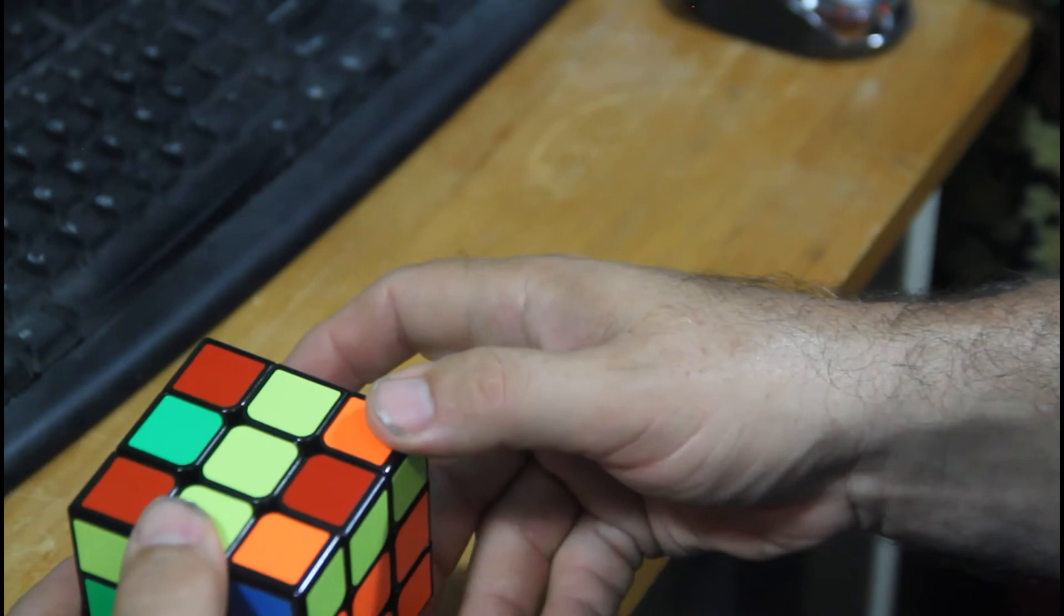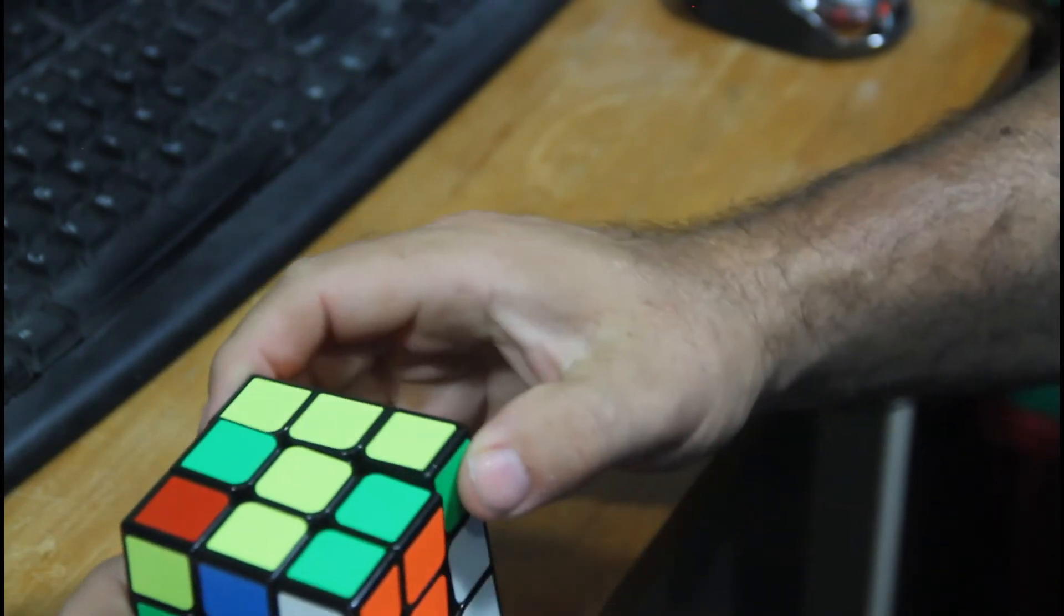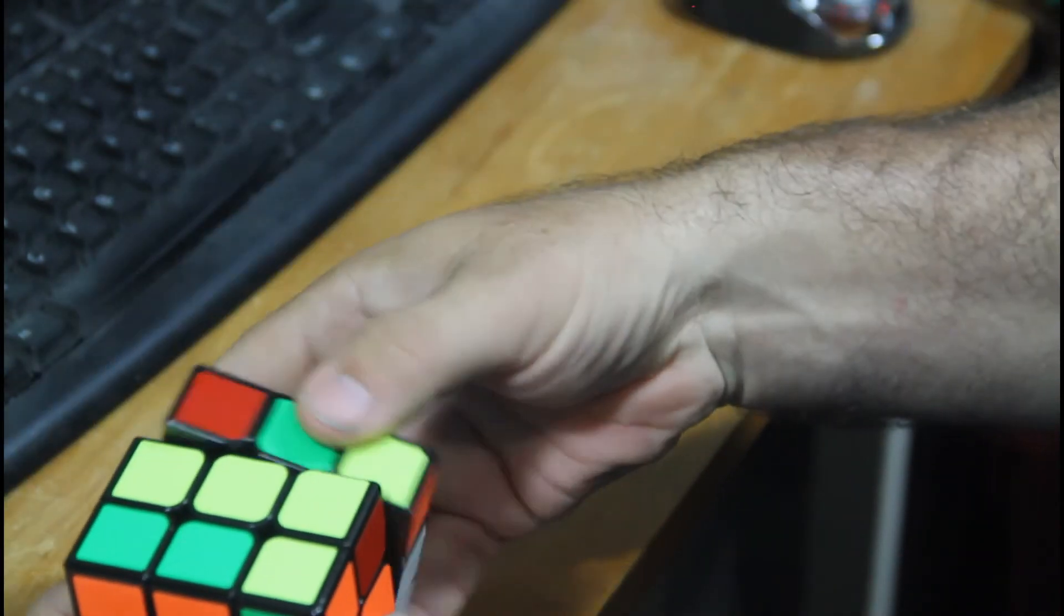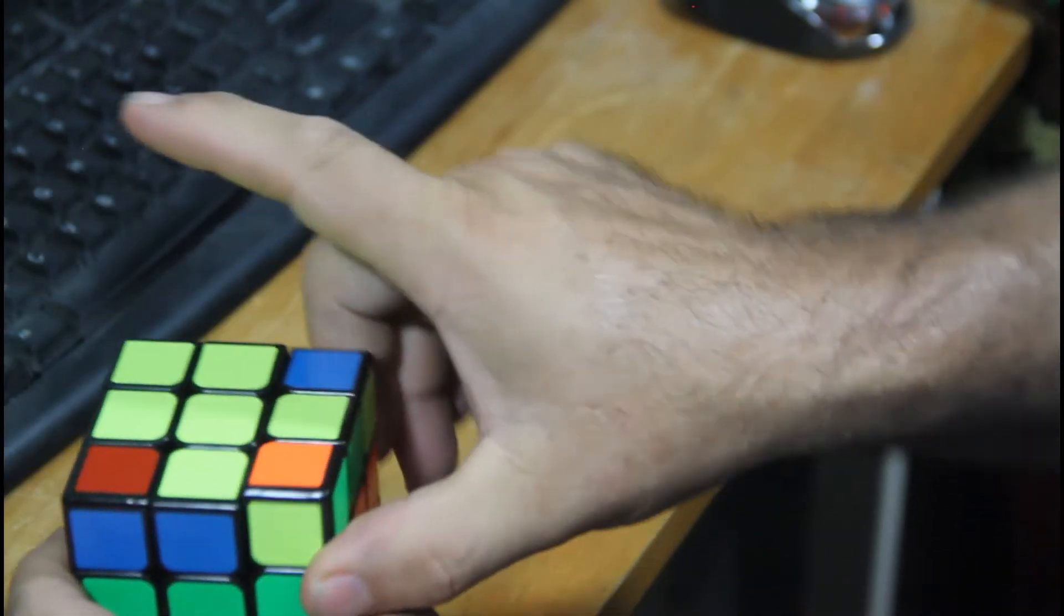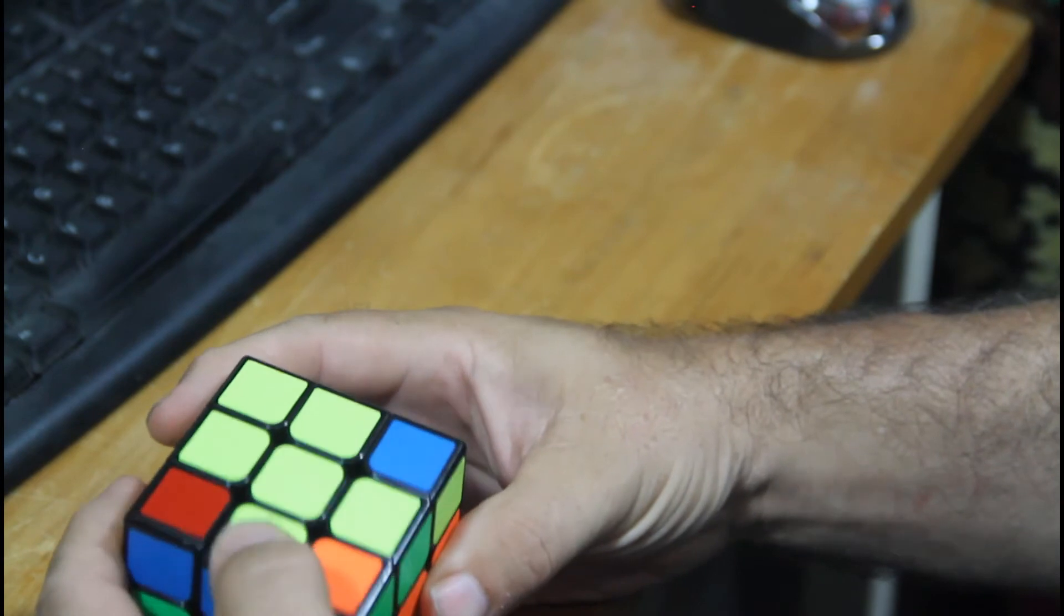If you get just a straight line, you move front, right, up, right backwards, up backwards, and then front back. That will give you your cross.